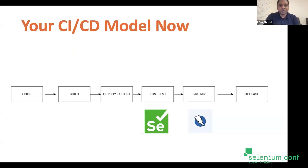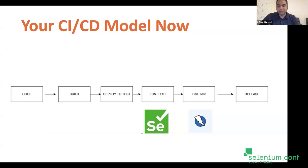Your CI/CD model will be that once you build and deploy code, you do functional testing with Selenium and you do penetration testing or DAST with OWASP ZAP. After both these testing activities, you do bug fixes and release.